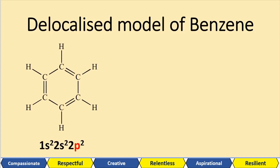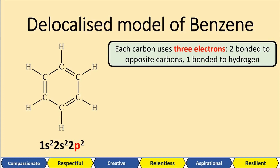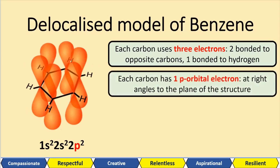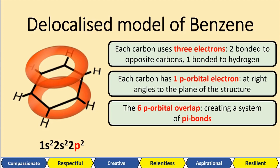Let's look at this delocalised model of benzene. Each carbon uses three electrons — two bonded to the opposite carbons, and one bonded to a hydrogen. If we focus on one of the carbons, it is bonded to two opposite carbons and also one hydrogen. I'm showing the p orbital, which is the highest energy orbital in carbon. The p orbitals are at right angles to the actual plane of the structure. The six p orbitals — remember you've got six carbons — overlap, turning your p orbitals into pi bonds.